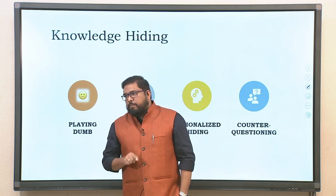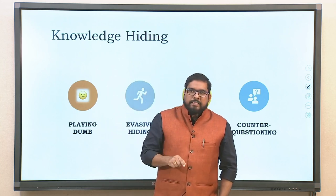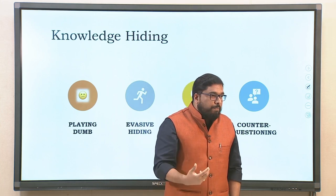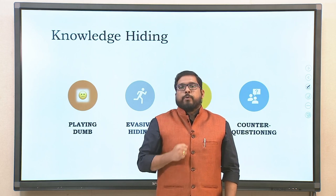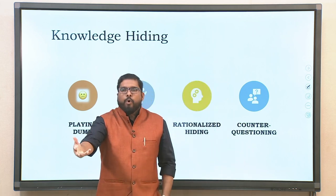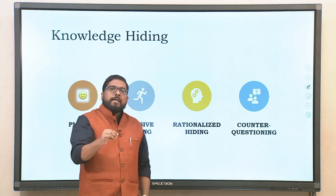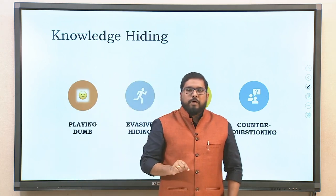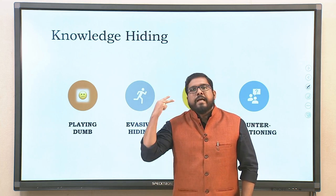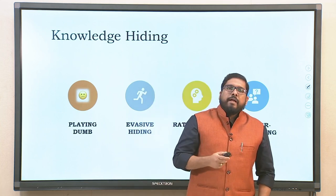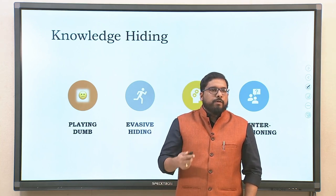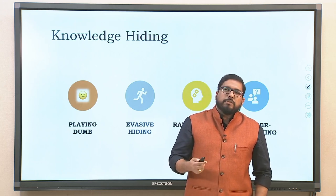These three strategies — playing dumb, evasive hiding, and rationalized hiding — were brought out by Connelly et al.'s 2012 study. Interestingly, another study by Jayan in 2018 came up with a fourth aspect more prominent in the Indian context: counter questioning. The moment you ask something, they start questioning you back so that core knowledge is not shared. These are the strategies generally observed in organizations as part of knowledge hiding.